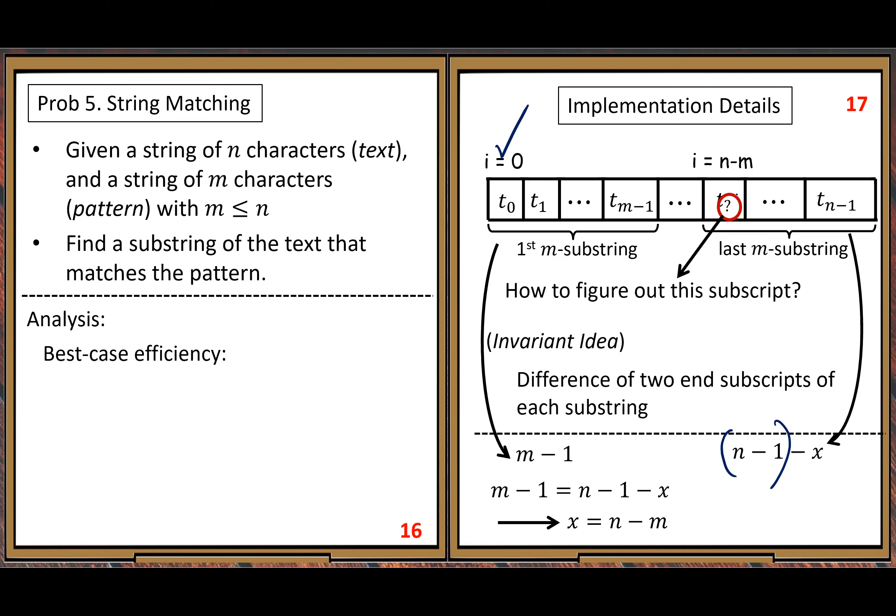Now the last thing: efficiency. How many character comparisons do we need? We need to compare character by character, so let's count the number of character comparisons. For the best case, it's only m. Because when you take the first m-substring, you match it — you get a match for the given pattern, so you're done.